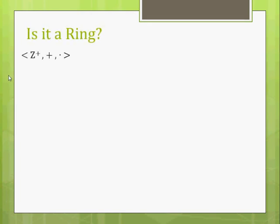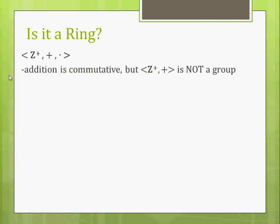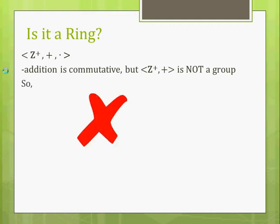Next up, we have the positive integers under addition and multiplication like normal. What do you think? This time we have addition is commutative, but we don't have an additive identity in our set. We're just talking about the positive integers, so the normal identity for the integers is zero, which is not in the positive integers. So that's not a group — we can already stop there. Not a ring.